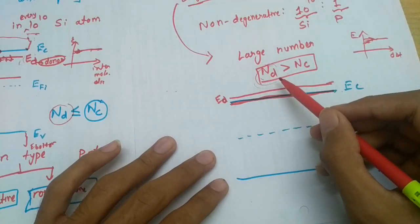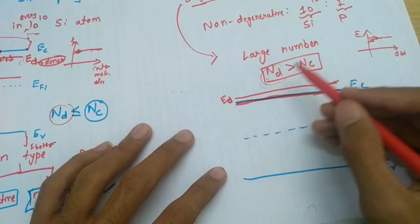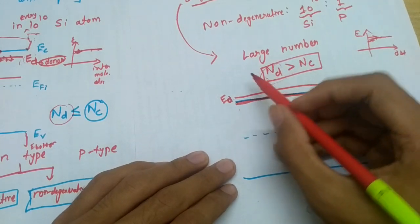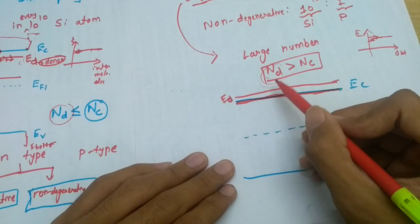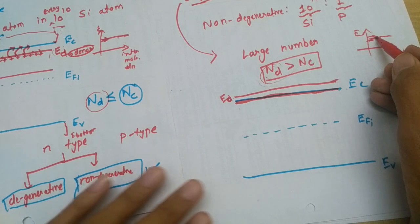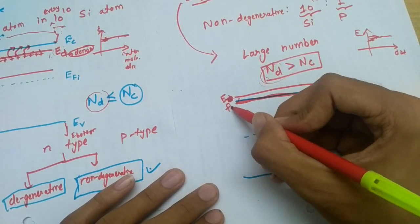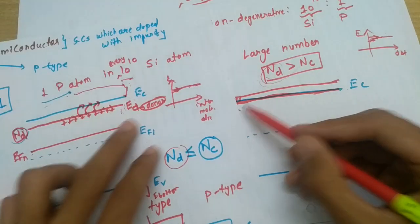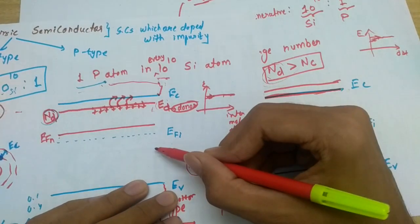Now in this case, what happens due to this condition? It might happen, it will always happen, that ED will go above EC. And also one more thing: phosphorus atoms are very much near and due to that, ED will also get splitted. Sorry, this is not ED, this is EFN. My mistake.